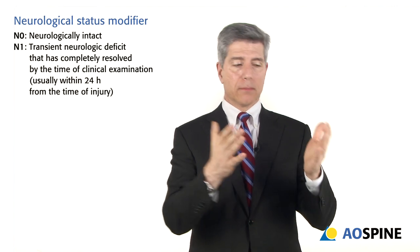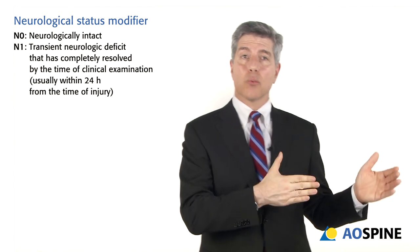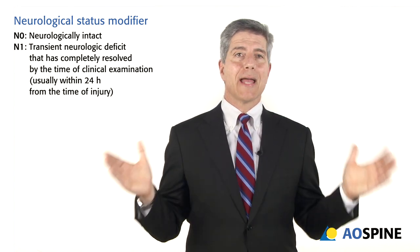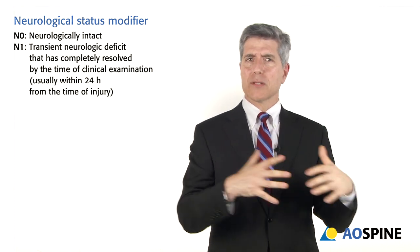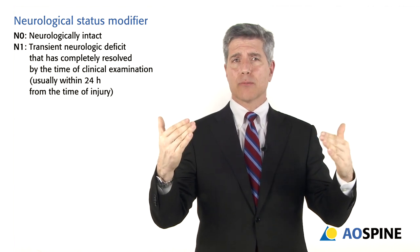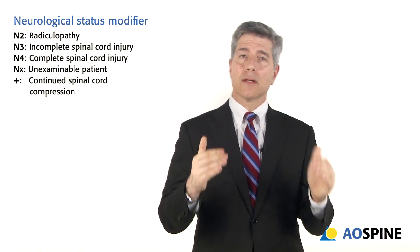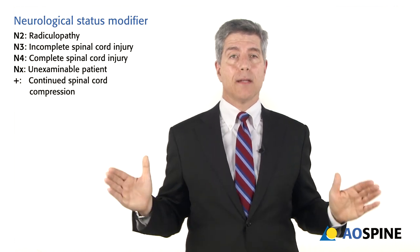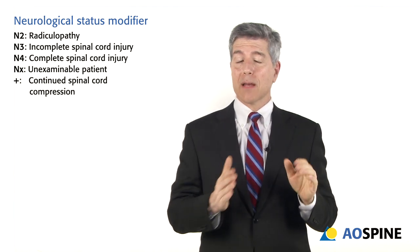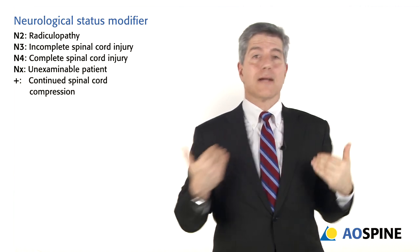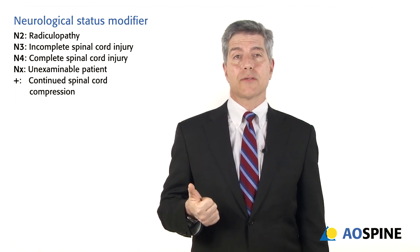The same neurologic classification used for thoracolumbar and subaxial applies here. N0 is neurologically intact. N1 is transient neurologic complaints that resolved. N2 is radiculopathy. N3 is incomplete spinal cord injury. N4 is complete spinal cord injury. NX means the patient is unconscious with unknown neurologic status. Adding a plus sign — only used when the patient has a neurologic deficit — indicates continued spinal cord compression, suggesting more aggressive surgical management may be needed.